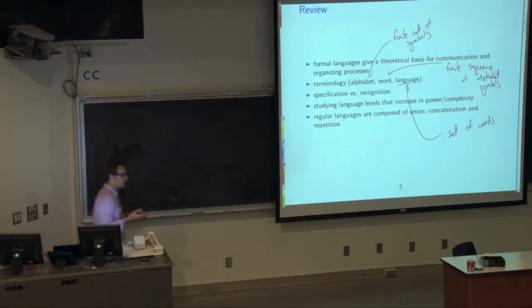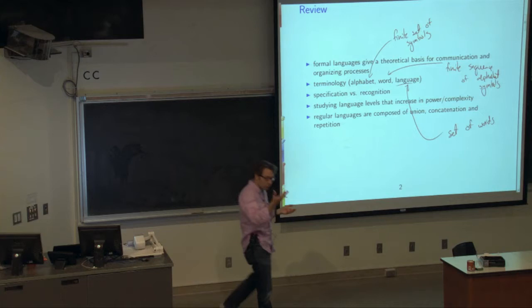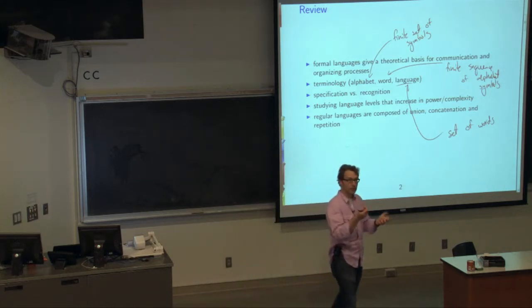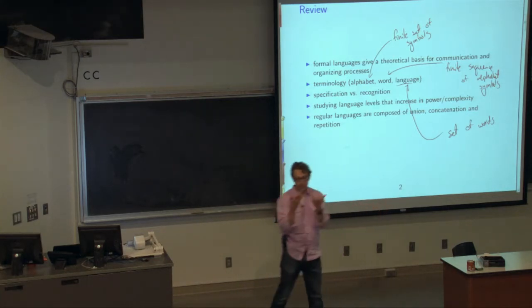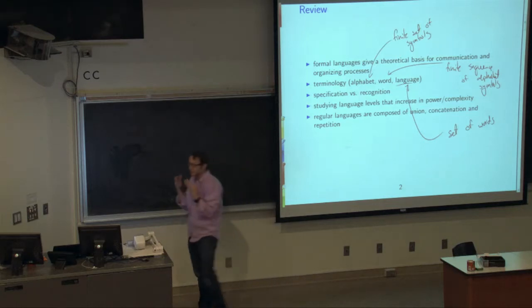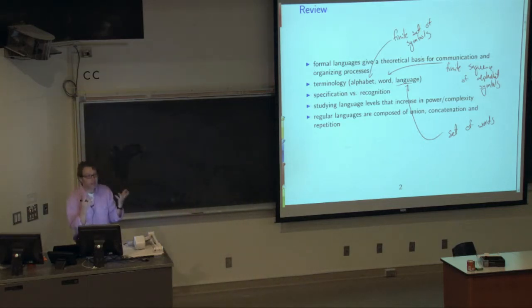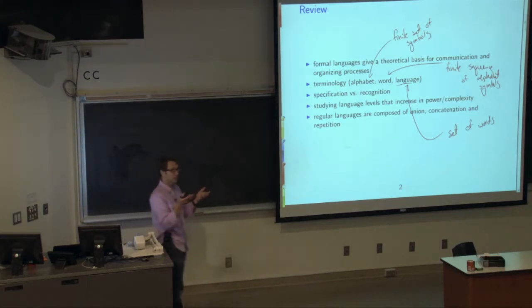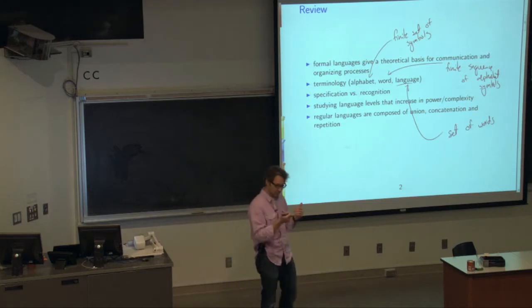We've talked about specification versus recognition. What that means is I can describe something and I can also recognize something. So, in some senses, a dictionary is a way of specifying a language. It has the set of all the words that are valid in English. But to recognize English is something different. It's a different process.